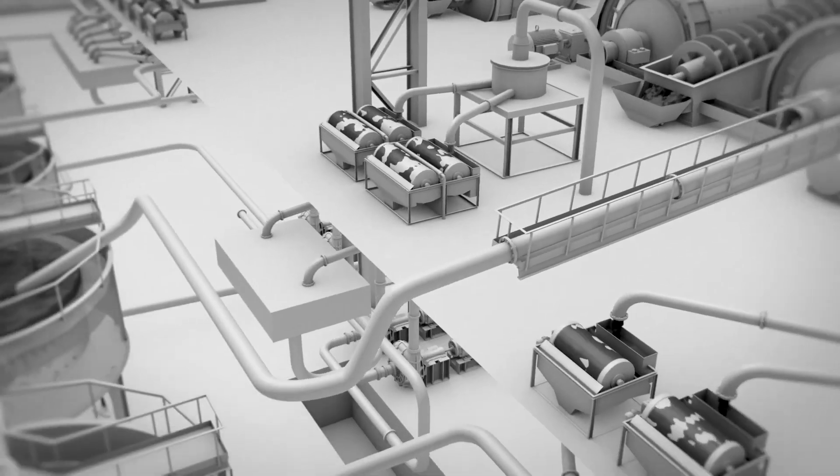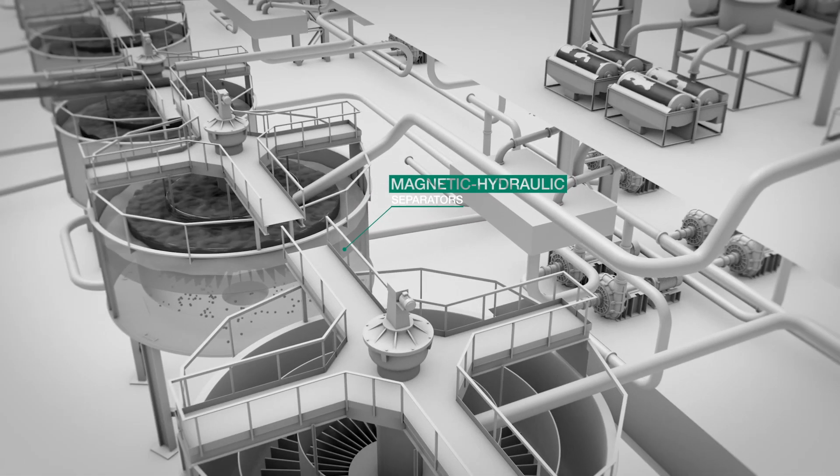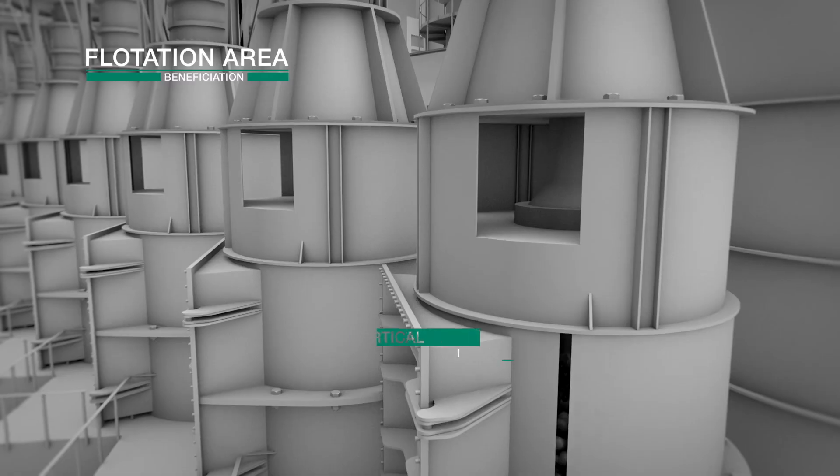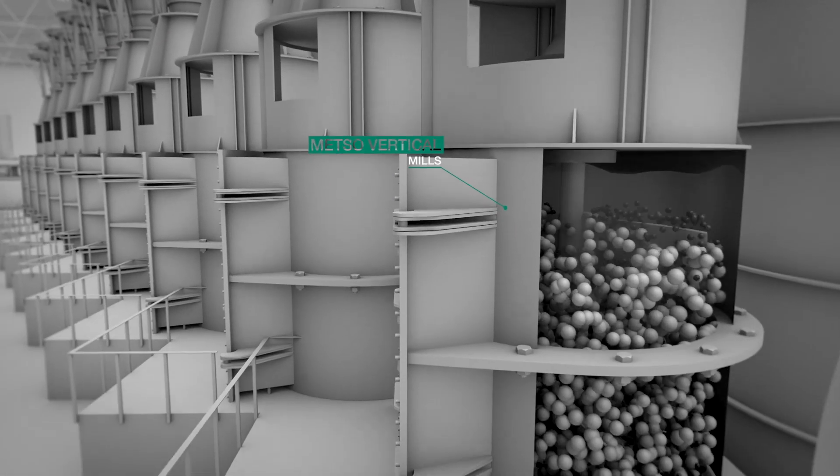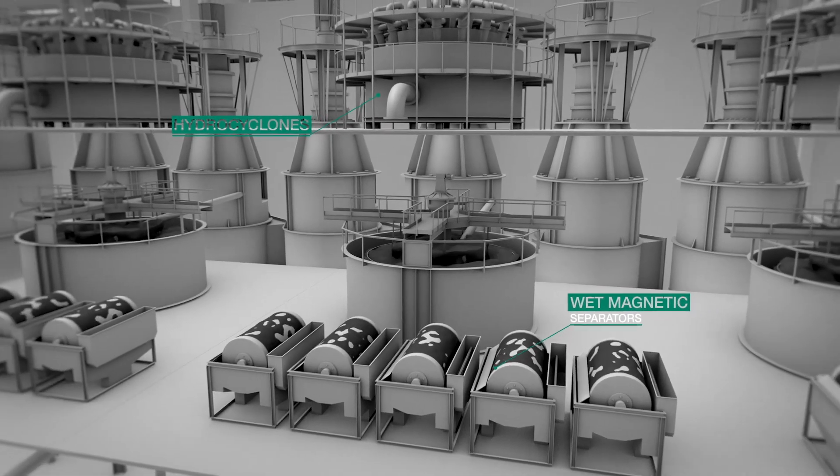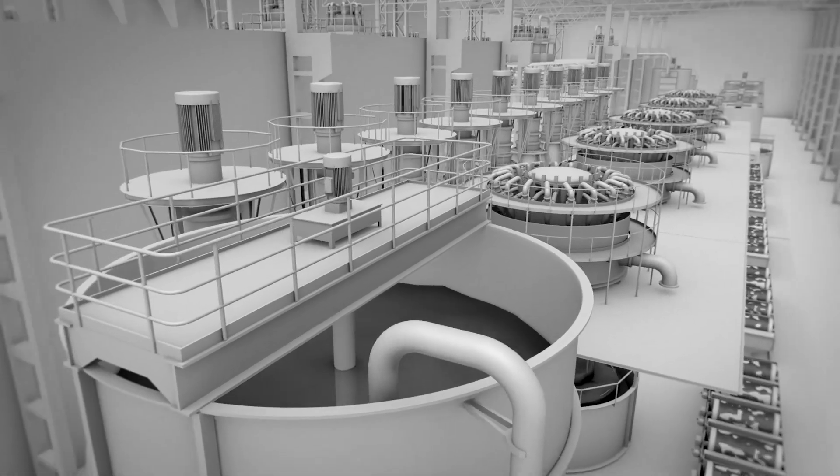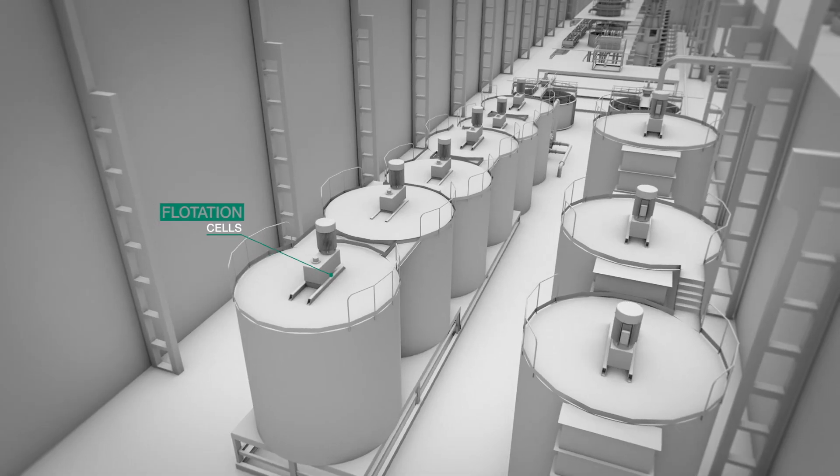Magnetic ore is pumped to flotation. At the flotation upgrade area, mezzo vertical mills regrind the magnetic ore, and it is subject to further classification and desliming before being fed to the flotation cells, where reagents are added.